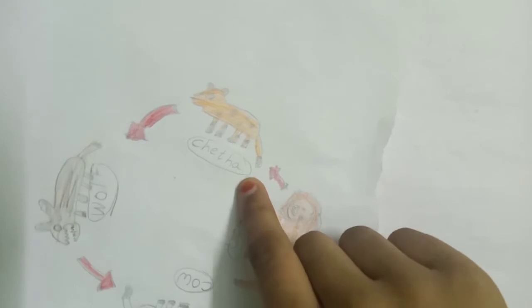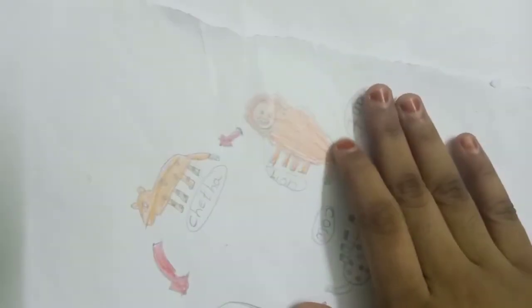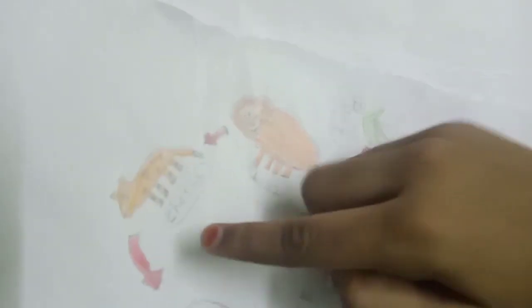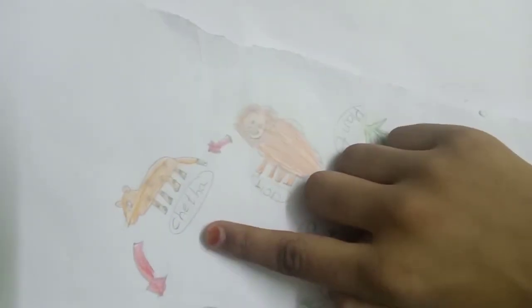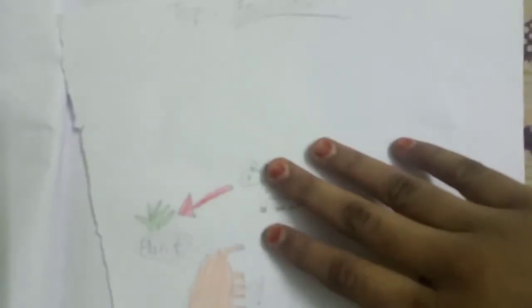And here we go, the next one. Here the lion is eating a cheetah, or we can also say that the cheetah is getting eaten by a lion. The lion's food is a cheetah. So that's all for today.